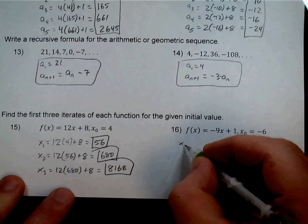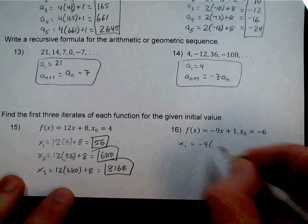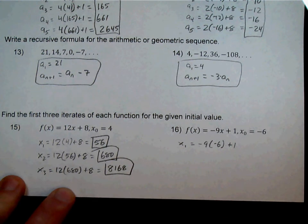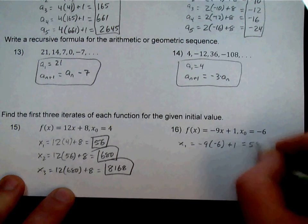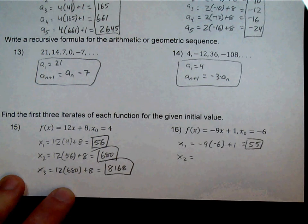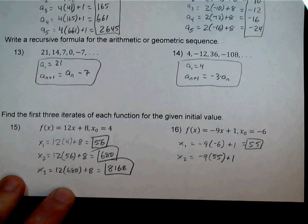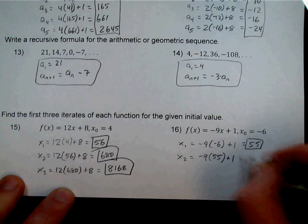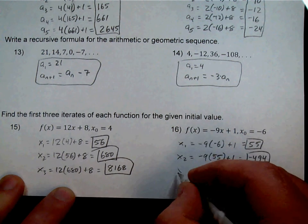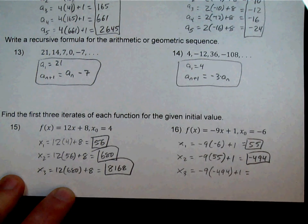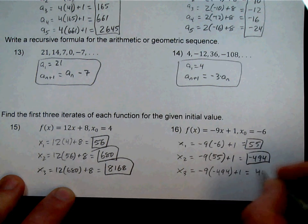Number 16: the function is negative 9 times x plus 1, and the initial value x sub 0 is negative 6. Plug in negative 6: negative 9 times negative 6 plus 1 gives 55. For x sub 2, take negative 9 times 55 plus 1, giving negative 494. For x sub 3, take negative 9 times negative 494 plus 1, giving 4,447.